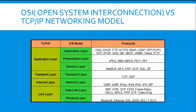On the application layer in both TCP/IP and OSI models, we have application, presentation, and session. Protocols include DNS (Domain Name System), DHCP (Dynamic Host Configuration Protocol for checking IPs), FTP (File Transfer Protocol), HTTPS (Hypertext Transmission Protocol Security), IMAP, LDP, NTP, POP3, RTP, RTPS, SSH, SAP, SMTP, and SNMP, which is mainly used for 5G. Also Telnet and TFTP.